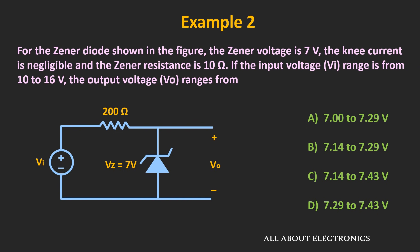Now let's move to the next example. Here we have a Zener diode circuit where the Zener voltage is 7V and the knee current is negligible, but the Zener resistance is 10 Ω. The circuit is operated with an input voltage ranging from 10V to 16V, and we are asked to find the output voltage range from four given options.